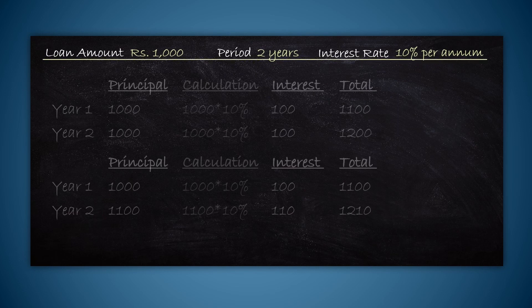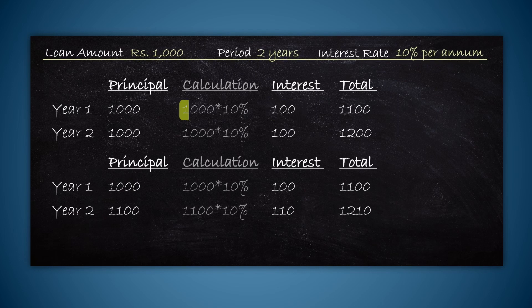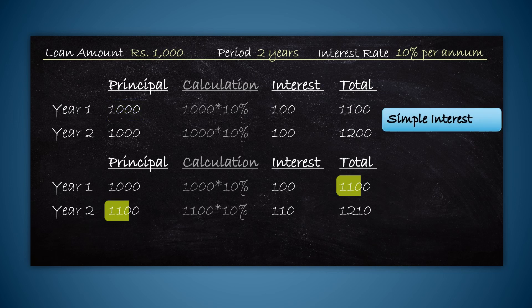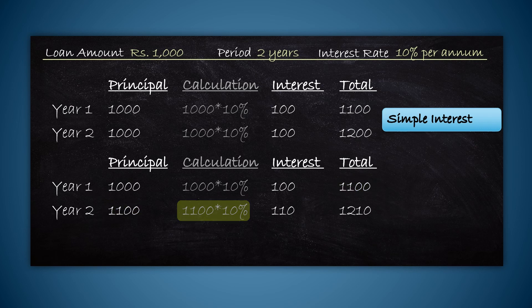In the first year the interest is 100 rupees, which is 10 percent of thousand. Now in the second year, if you charge the 10 percent only on the original amount of thousand rupees, it is called simple interest. But instead, if you take the 1100, which includes a hundred rupees interest for the first year, and calculate 10 percent on this, it is called compound interest.